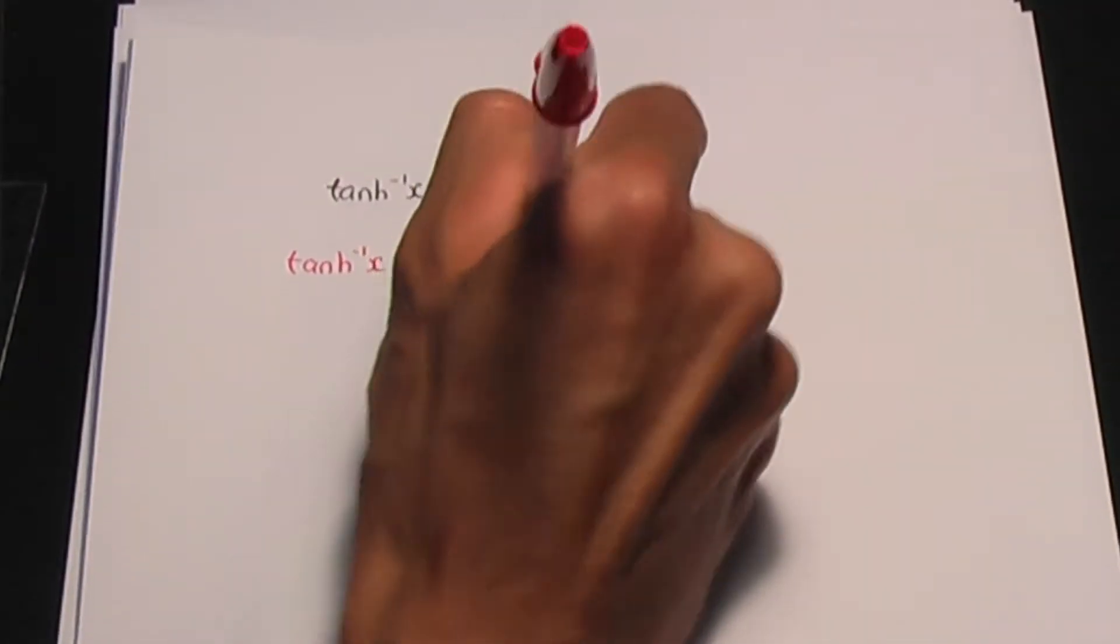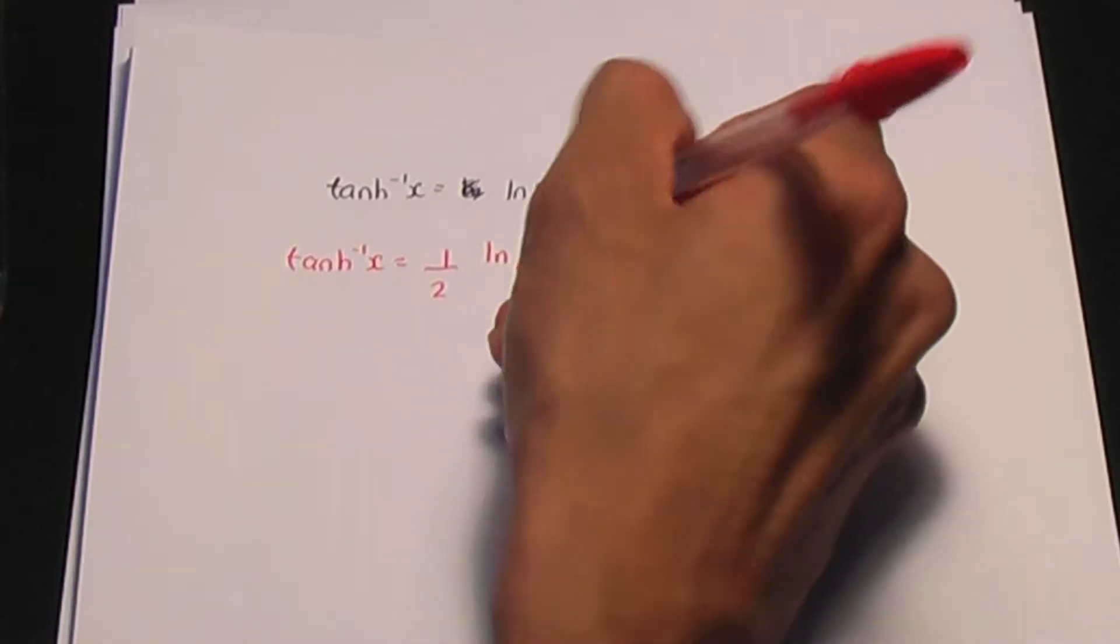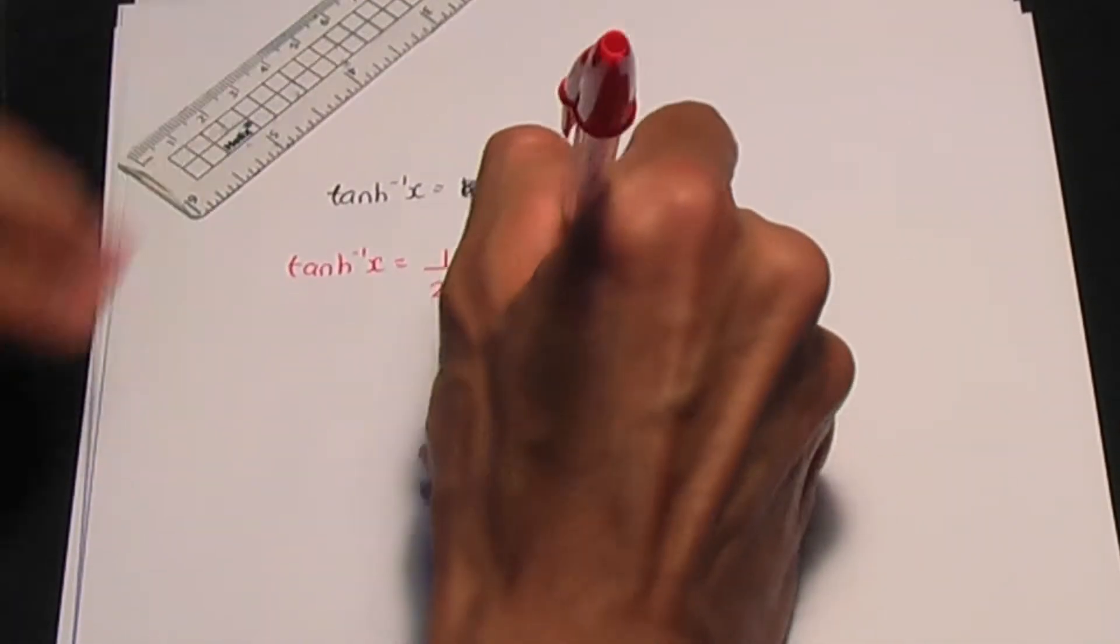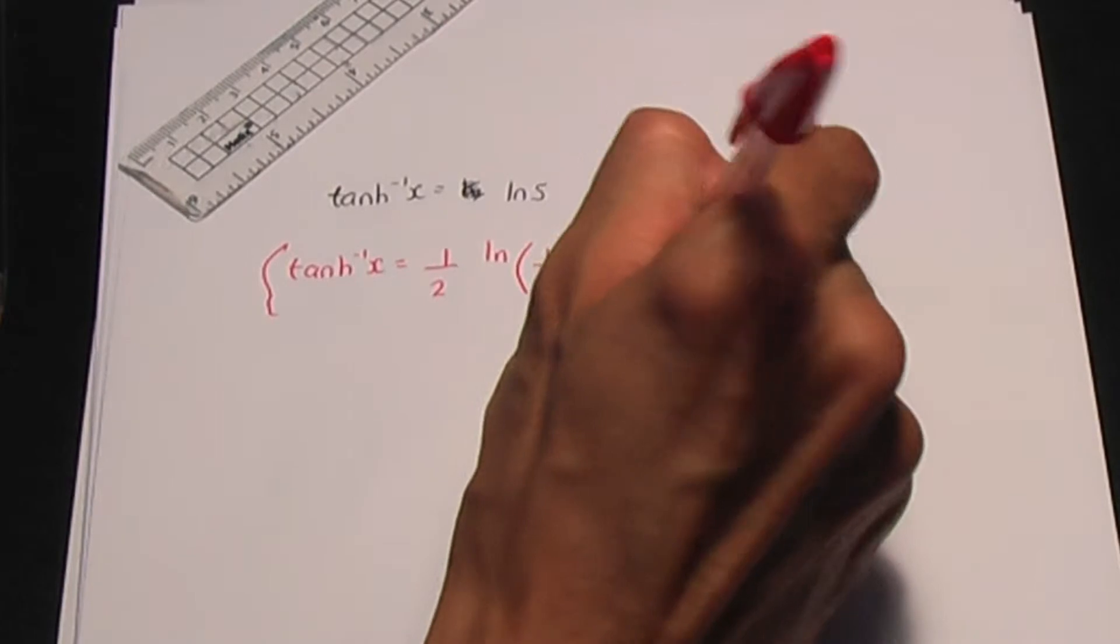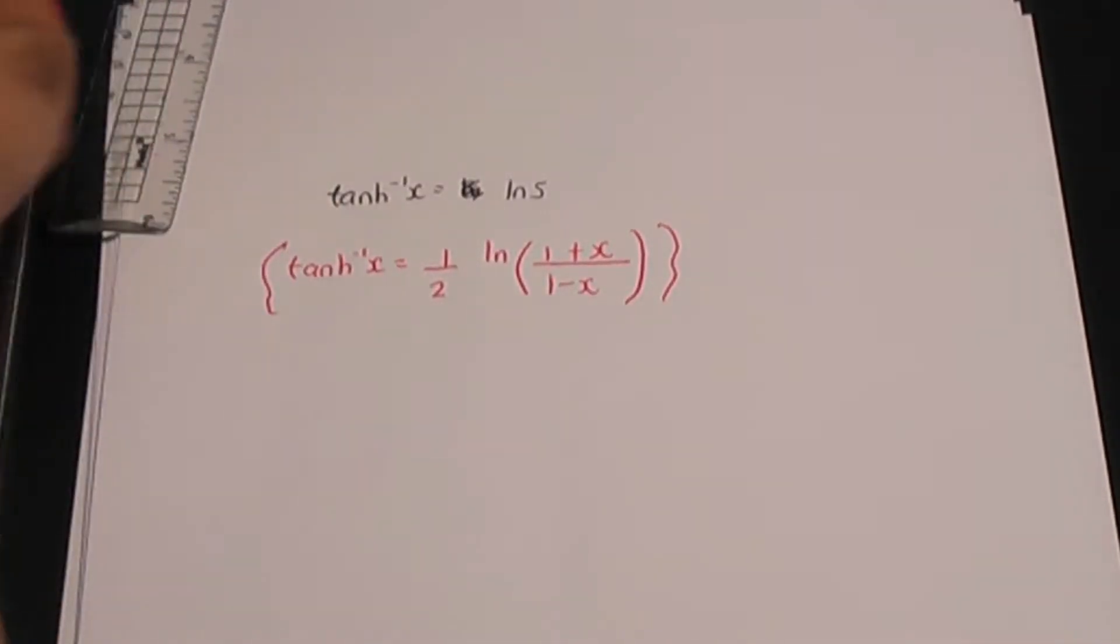So remember, if we have an equation involving the inverse hyperbolic tan, use the definition for the inverse hyperbolic tan. Let me make a note in red, the definition for the inverse hyperbolic tan of x is 1 over 2 ln of 1 plus x over 1 minus x. So that was the definition for the inverse hyperbolic tan of x.